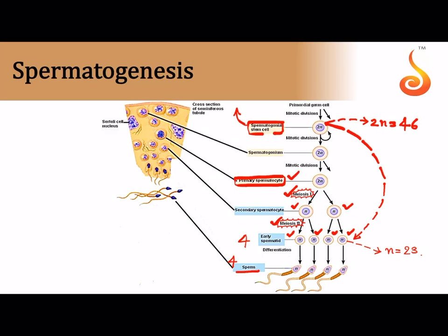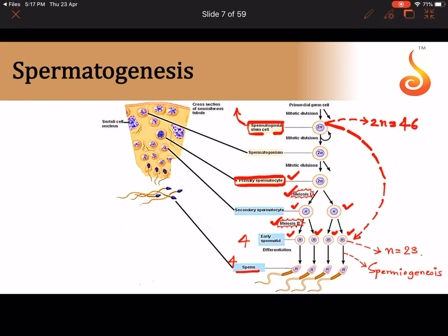The process by which spermatids — which are non-motile, spherical, and contain a lot of cytoplasm — transform into sperm is called spermiogenesis. Spermiogenesis is the name given to the last part of spermatogenesis. The ratio to remember: for one male germ cell (spermatogonium) we get four sperm.